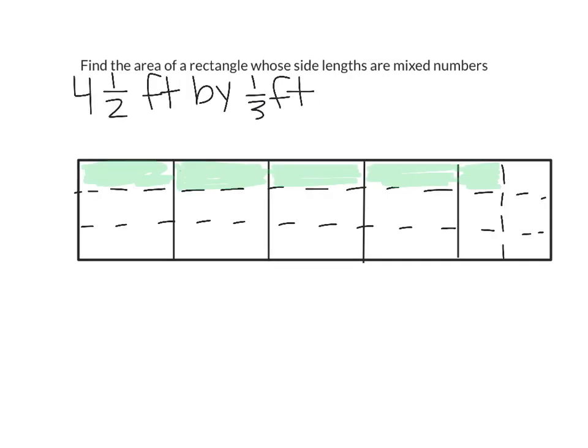Sometimes our side lengths might be mixed numbers as well. In this example, we have 4 1/2 feet by 1/3 feet as our dimensions of our rectangle. I went ahead and set up our model that we can use to count the number of squares to find the area.